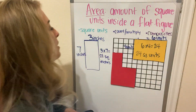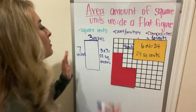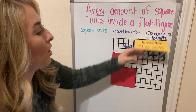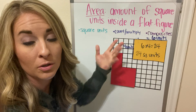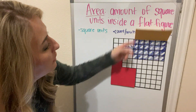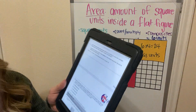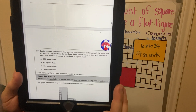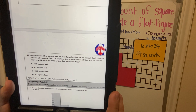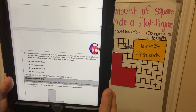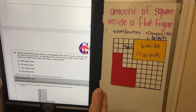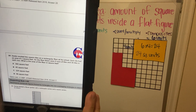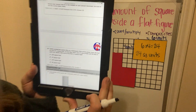I'm going to read this problem and we're going to solve it without using squares. Remember, squares form an array, so if you can draw the array from the numbers, you'll be able to multiply it. Here's the problem: Dante counted the square tiles on a rectangular floor at his school. Each tile had an area of one square foot. On the floor, there were nine rows of tiles and 36 tiles in each row. What is the area of the floor in square feet?